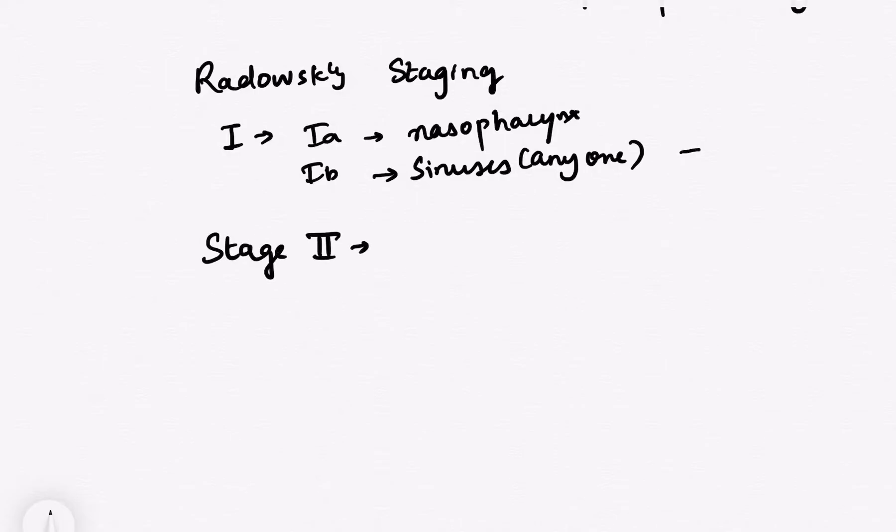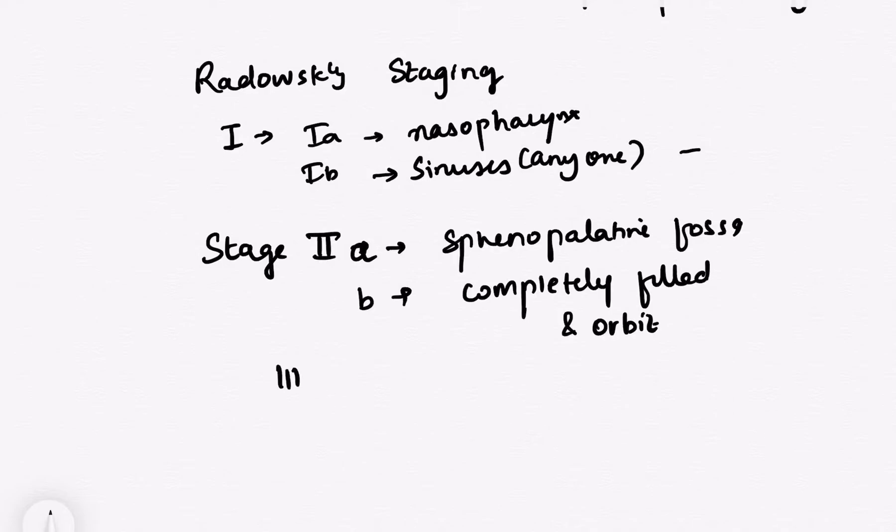Stage 2 means it has gone into the sphenopalatine fossa and stage 2b means it has completely filled the sphenopalatine fossa and gone up to the orbit. Now stage 3 you have to remember is anything which is in the cranium that is intracranial spread. Stage 3a is limited and stage 3b is extensive intracranial spread.